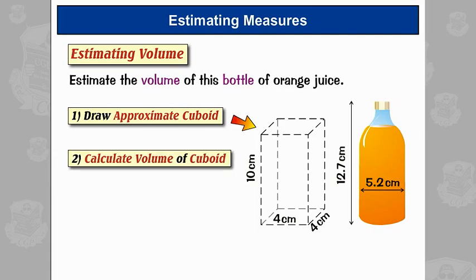This is all very approximate, so I've chosen easy numbers to calculate with. Now I just calculate the volume of the cuboid. So that's length times width times height, which is 4 times 4 times 10, and that equals 160. So my estimate for the volume of the bottle is 160 centimetres cubed. And remember, the units are cubed because it's a volume.